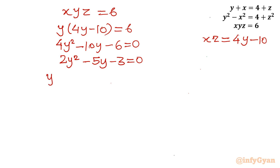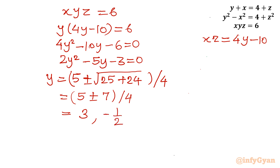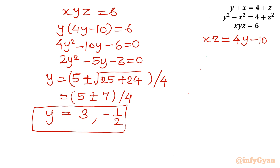Now I will apply the Sridharacharya formula. y equals minus b, so minus of minus 5, plus or minus the square root of b squared minus 4ac, all divided by 2a. Here b squared is 25, and 4ac equals 4 times 2 times 3 equals 24. So y equals (5 plus or minus square root of 49) divided by 4, giving (5 plus or minus 7) divided by 4. This yields y equals 12 over 4 equals 3, or y equals minus 2 over 4 equals minus one-half. There are two values of y: 3 and minus one-half.